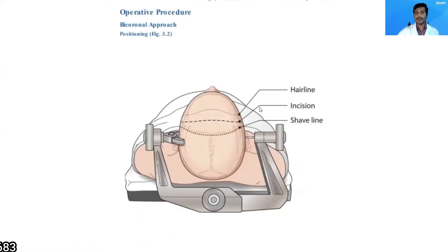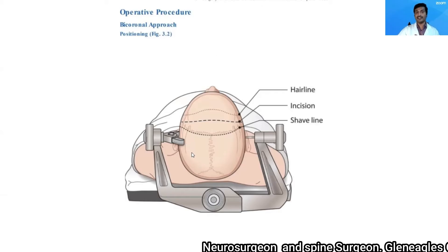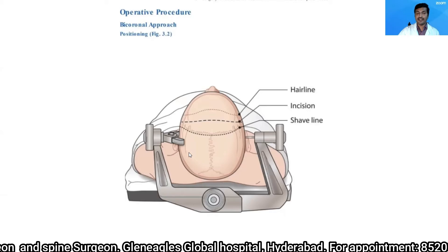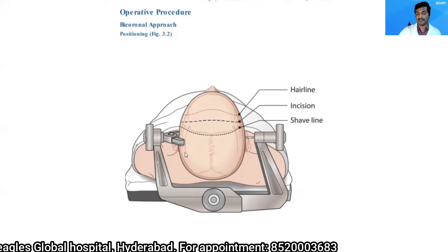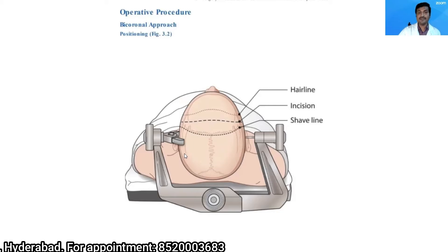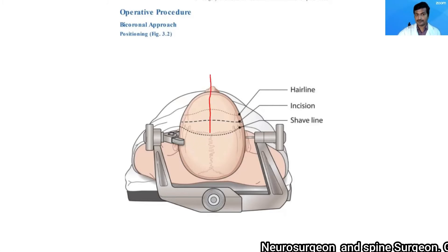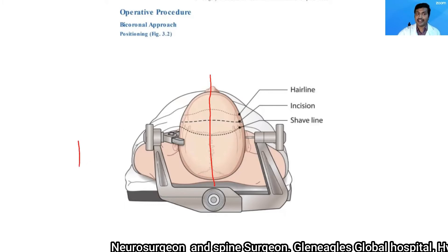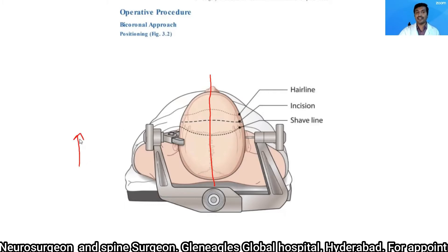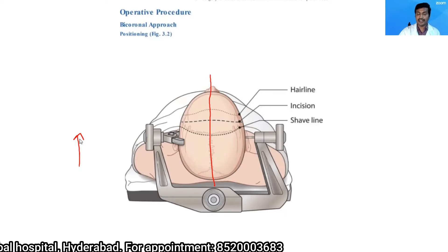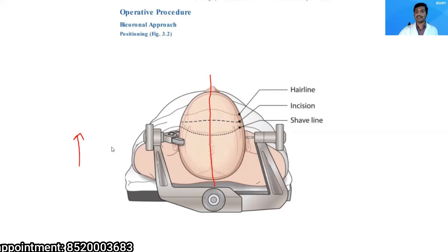For the operative position, we fix the head. When planning a bicoronal technique, I prefer rigid immobilization in a three-pin headrest, though a horseshoe headrest can be used to save time. The head is kept neutral in the midline and slightly elevated above heart level to ensure adequate venous return, decrease brain swelling, and reduce venous ooze.